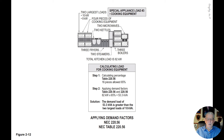53.3 kVA is greater than the two largest loads of 18 kW, seen at the top left of the illustrated cooking equipment. The two largest loads — 10 kW and 8 kW — is where the 18 kW figure comes from. All we're doing is converting kW to kVA, as the code requires.